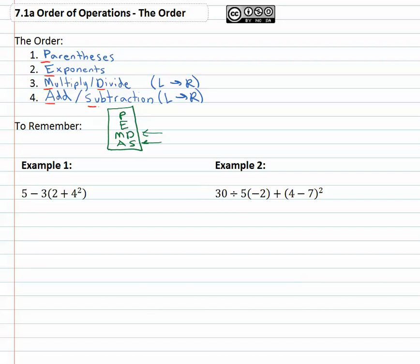So let's take a look at an example. Our first example here is 5 minus 3 times 2 plus 4 squared. Order of operations tells me to do parentheses, exponents, multiply and divide, add and subtract. So first we're going to look inside the parentheses to decide what is done first inside the parentheses. Inside the parentheses we have the choice between an exponent or adding and exponents come before adding, so let's do that exponent.